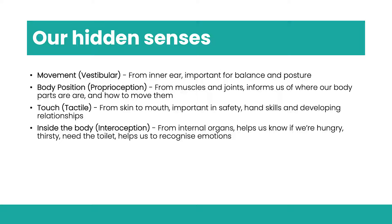The vestibular system is really important for maintaining balance and posture and adjusting our body position — critical for moving safely. Next is our body position sense, or proprioception. Located deep in our muscles and joints, every time we move a limb or change position, messages are sent to our brain telling us where our body parts are in space and in relation to our environment, developing our body awareness.